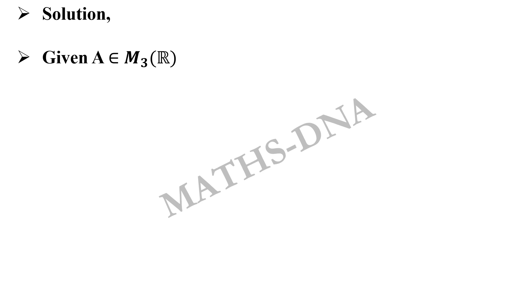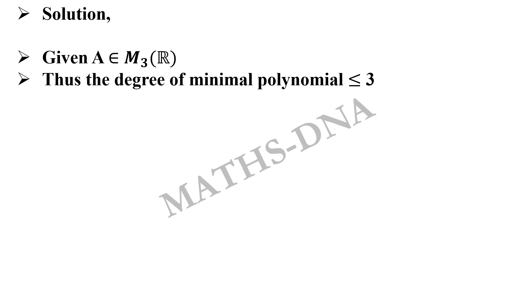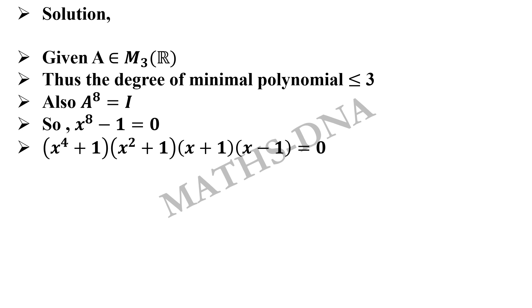Let us solve this question. As per the given data, A belongs to matrices of order 3×3 whose entries are real. We can clearly see that if the matrices are of order 3×3, then the minimal polynomial will definitely be of degree less than or equal to 3. Given that A raised to 8 equals I, from here we can write x raised to 8 minus 1 equals 0. Further simplifying gives us (x^4 + 1)(x^2 + 1)(x + 1)(x - 1) = 0.